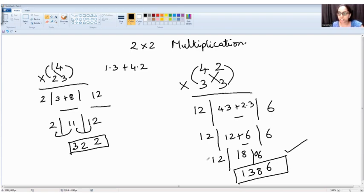So it is 1, 3, 8, 6. So 12, 18 and 0, 6. We need to add adjacent numbers. So what is it?